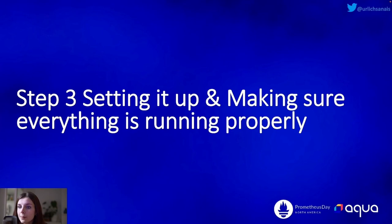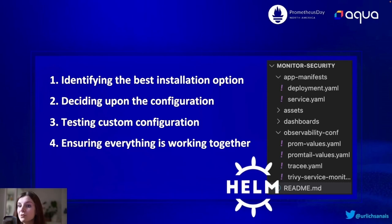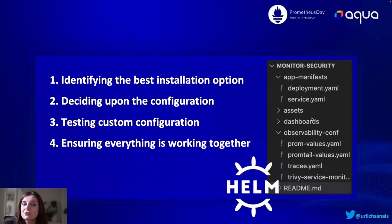That leads us to step three: setting it up and making sure everything is running properly — that's probably the most difficult step that will require lots of trial and error. The process is: identify the best installation options. I go by default with Helm, though installing directly via kubectl and Helm are the most popular options. Then you have to decide upon the configurations you want for those Helm charts. You can see here the screenshot of my demo application where I have worked out my different values files that I pass into my Helm charts upon installation.